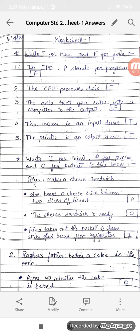Write I for input, P for process, and O for output in the boxes. Let us see the first one. Ria makes a cheese sandwich. Now we have three processes, sorry three points. We need to write P where it is process, I if it is input, and O if it is output.